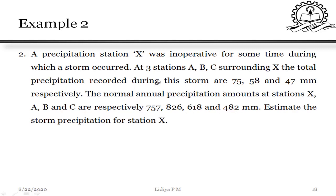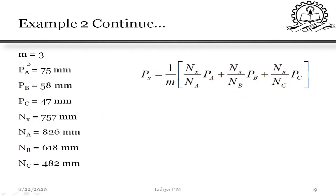First step: identify which method to use. The number of surrounding stations is 3. PA = 75, PB = 58, PC = 47, and we need to calculate PX. The normal average rainfall values are: NX = 757, NA = 826, NB = 618, NC = 482. We check whether the average values of the surrounding stations are within 10 percent of the missing station's normal value.